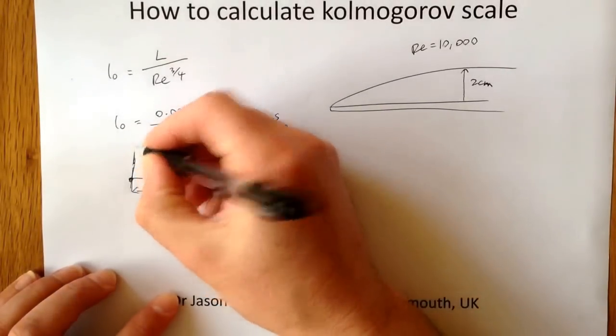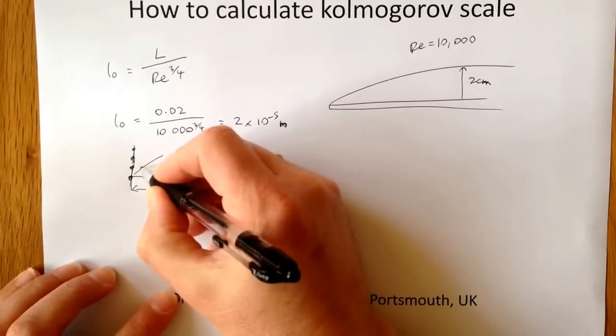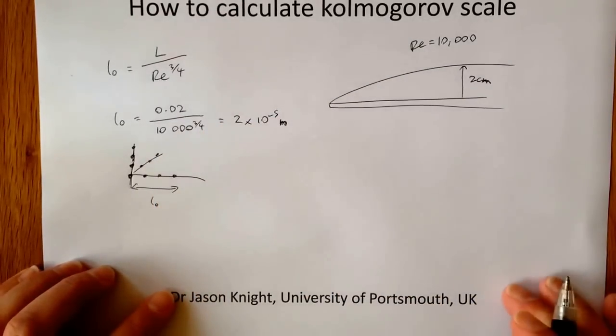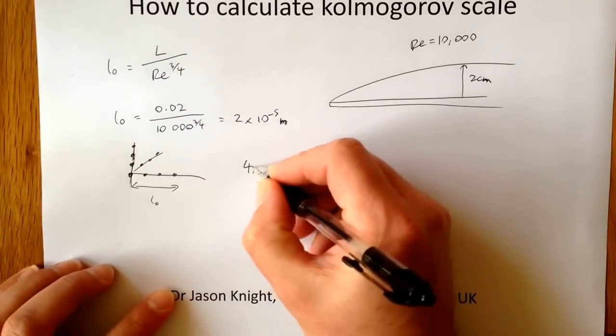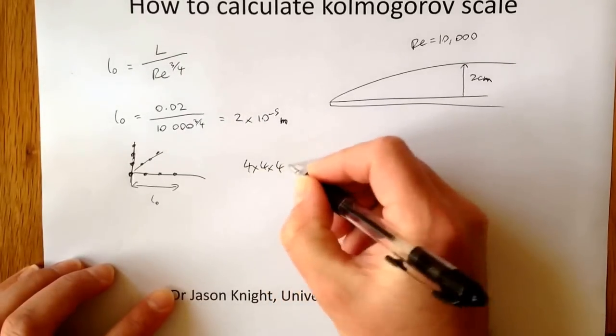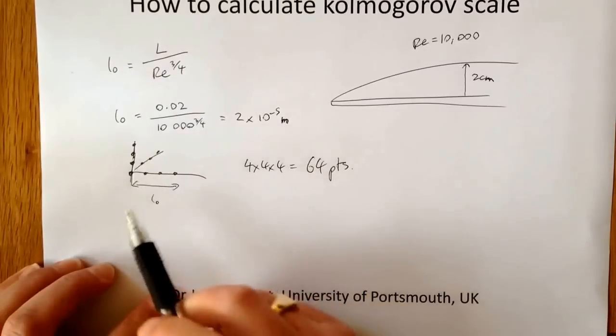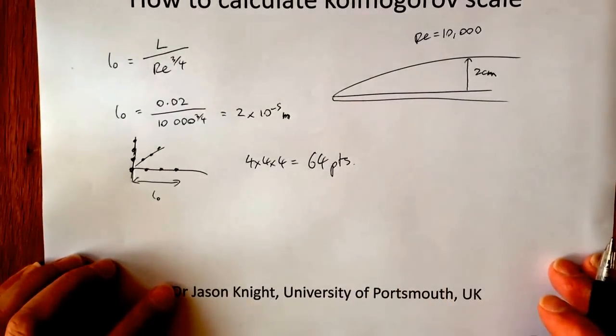However if you're in 3 dimensions, you'll also need 4 data points in the Y and also in the Z. So in total, you'd need 4 by 4 by 4, which equals 64 points in order to resolve that Kolmogorov scale in 3 dimensions.